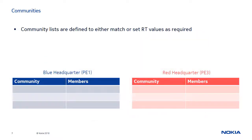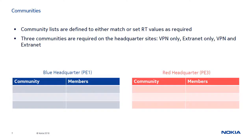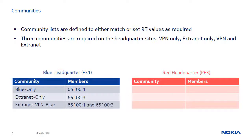In Extranet VPRN, community lists are defined to either match or set route target values as required. On each of the headquarters sites, PE1 and PE3, three communities are required. On PE1, Blue Only identifies blue VPN routes, and Extranet VPN Blue identifies blue VPN and extranet routes.